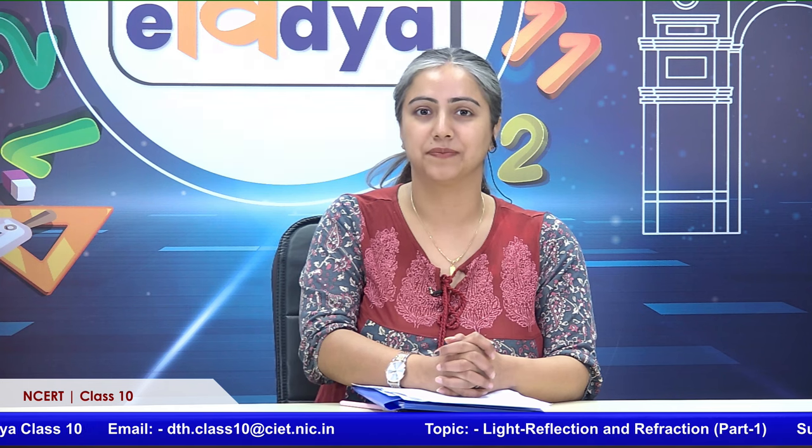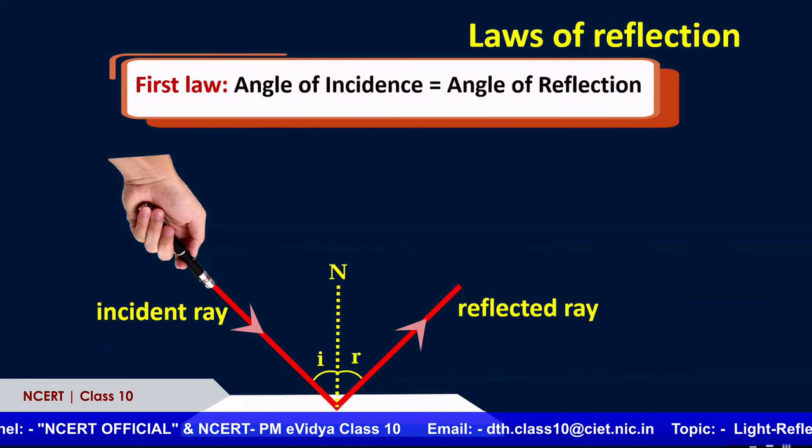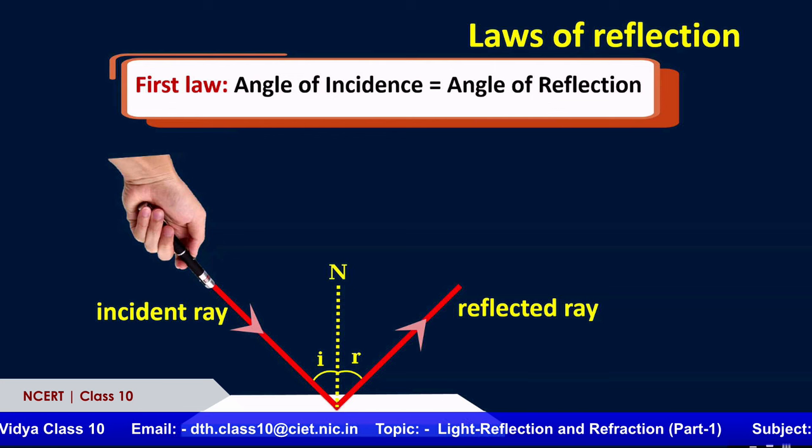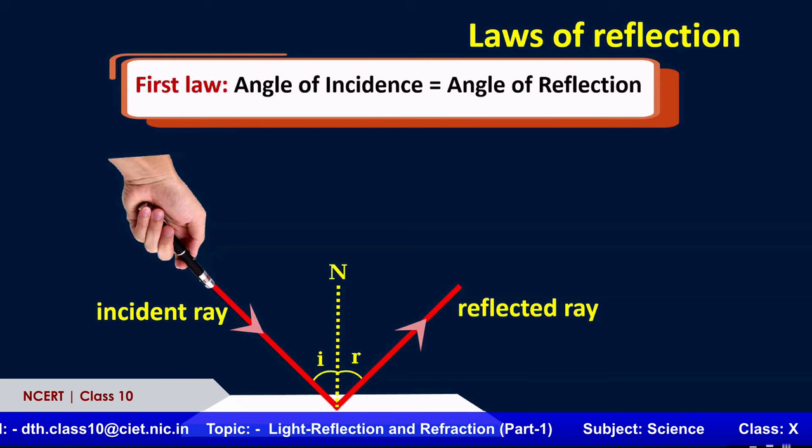This incident ray is reflected on the surface. The angle between the normal and the incident ray is called the angle of incidence, and the angle between the reflected ray and the normal is called the angle of reflection. There is a relationship between these two — that is the first law of reflection: the angle of incidence should be equal to the angle of reflection. If the angle of incidence is 30 degrees, then the angle of reflection is also 30 degrees. This law must be obeyed wherever reflection is used — not only on flat surfaces, but on curved surfaces as well.